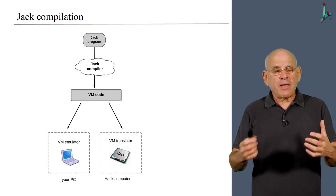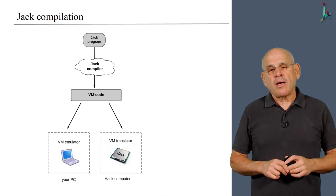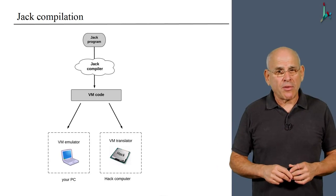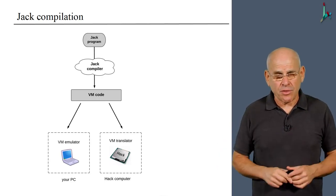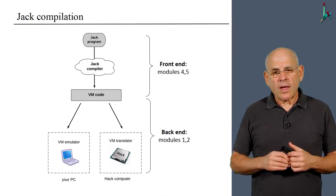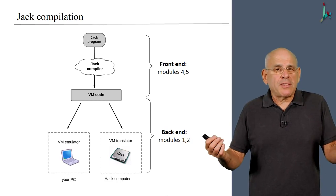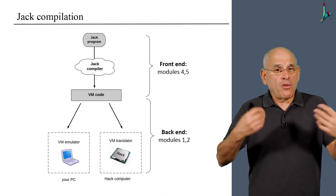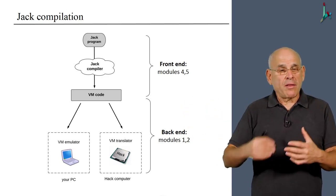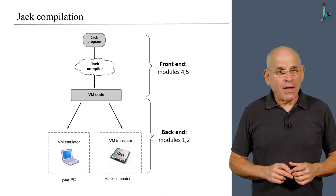This actually will be the pinnacle of module one, of what we do in this particular module. But it will take us several units to get to this level. So to sum up, in this module and the next one, we are going to write the VM translator. We are going to first understand what is a virtual machine, and then we are going to implement it. Then in modules four and five, we are going to write the compiler that will complete the overall compilation picture.